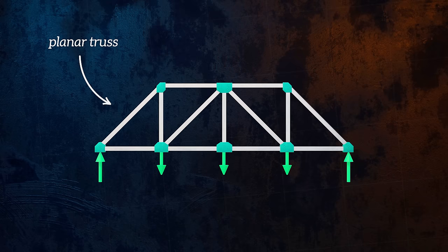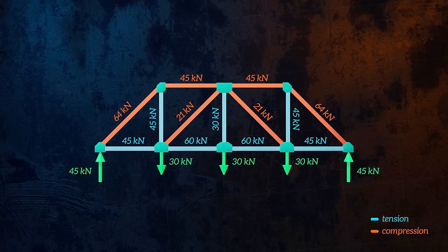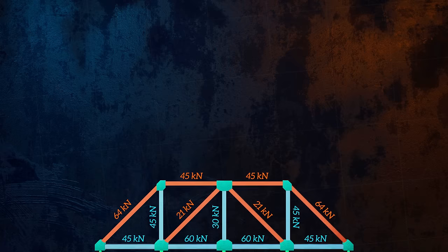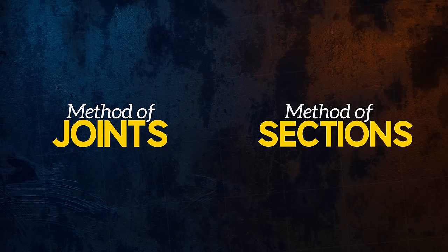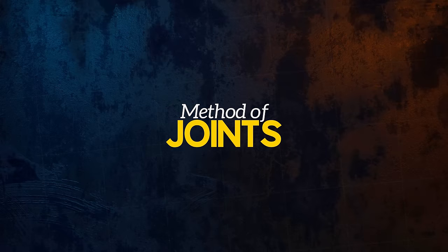To be able to design or analyze a truss, we need to be able to determine the force in each of its members. This allows us to check that the member can carry the loads without failing, or gives us the information we need to select the best cross-section for each of the members. There are two main methods we can use to do this: the method of joints and the method of sections. Let's look at the method of joints first, using the Fink roof truss we saw earlier.